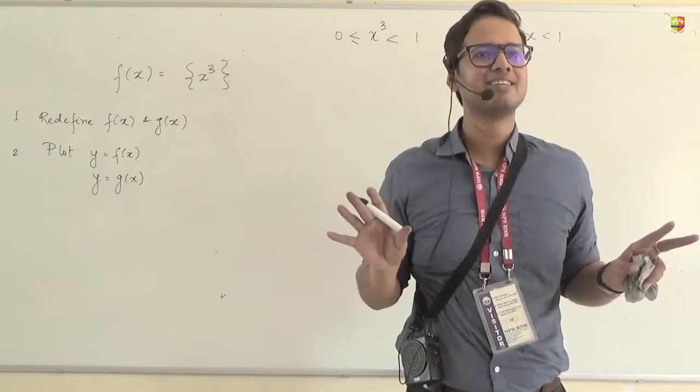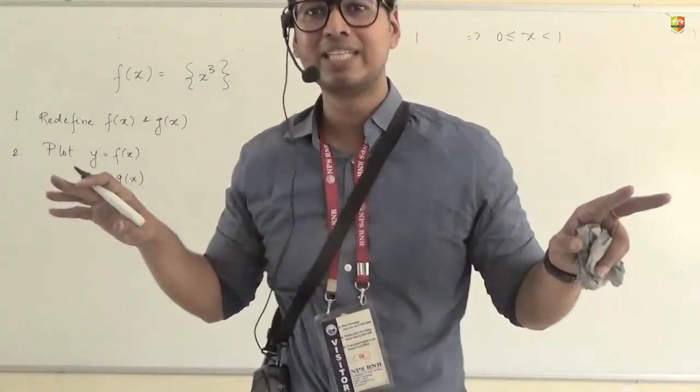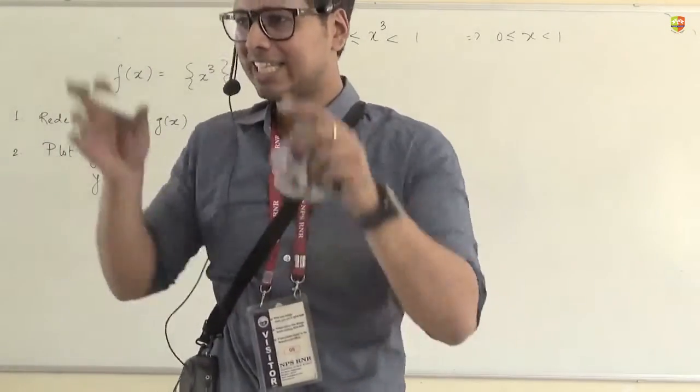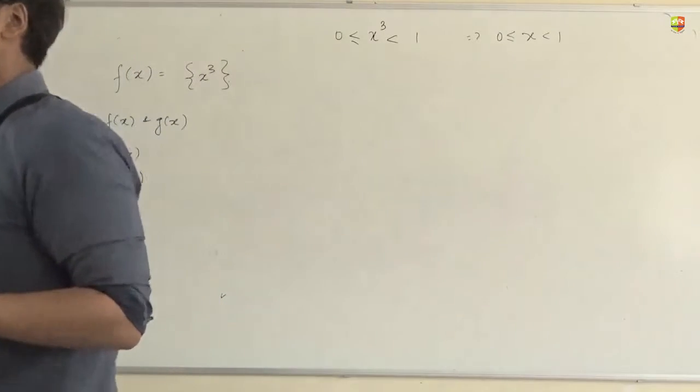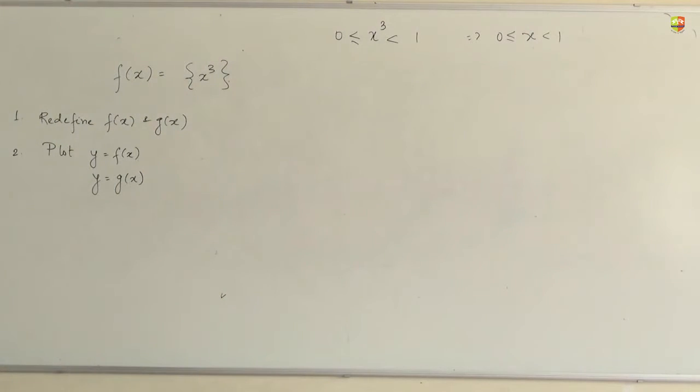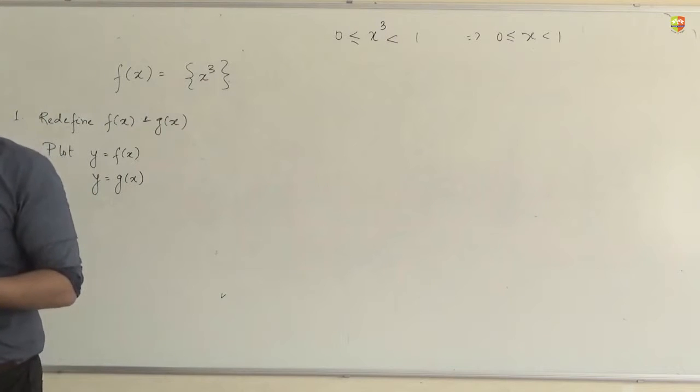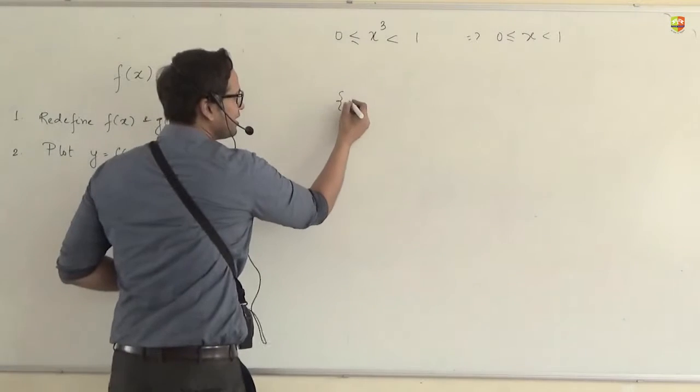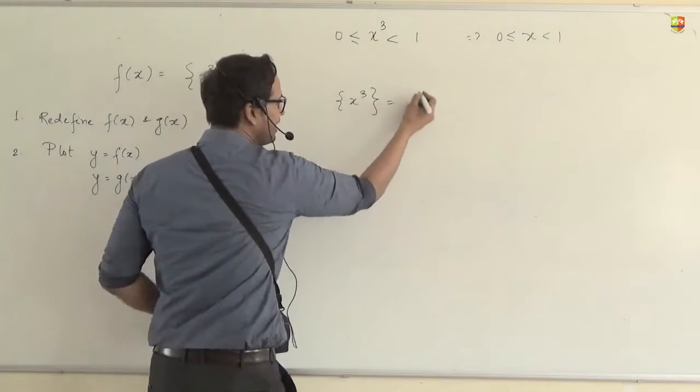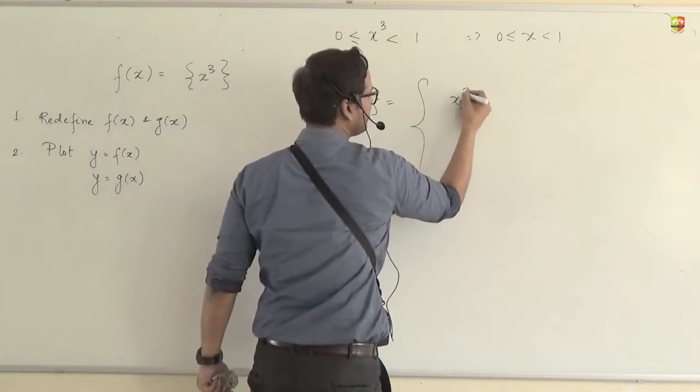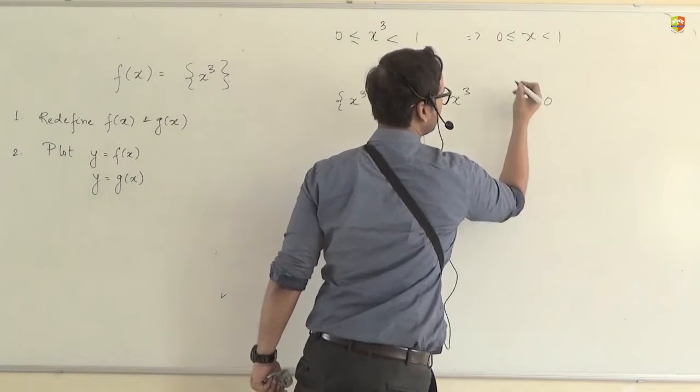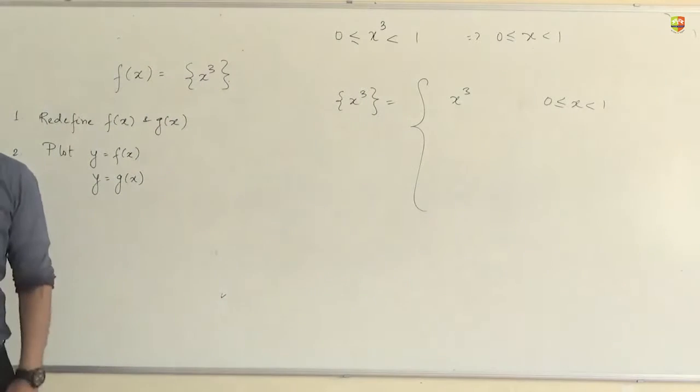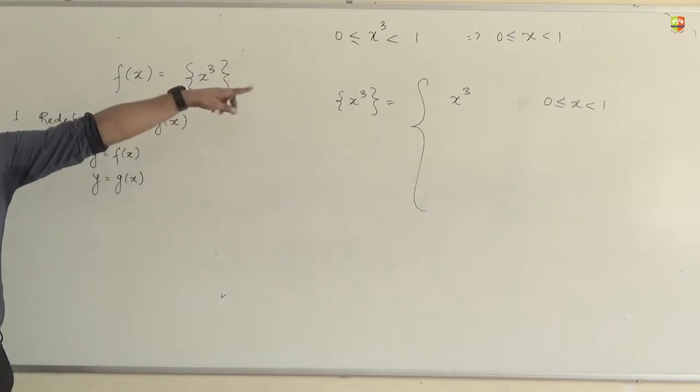When something is already between 0 and 1, what will fractional part do? Nothing to it. Fractional part will not change it at all. Because if something is already between 0 and 1, it is only in the fractional part. It is just like mod. Mod will do nothing to a positive number. So fractional part of something which is already between 0 and 1 will be the same number itself. Yes or no?